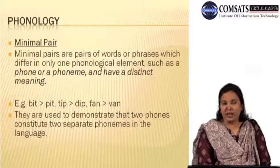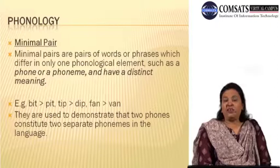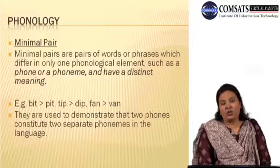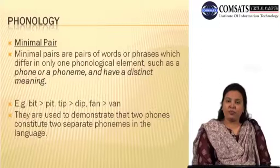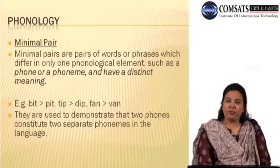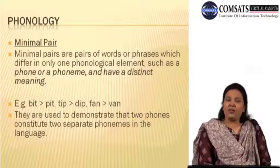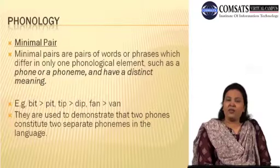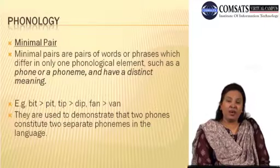Take another example: 'tip' and 'dip.' Again, the last two sounds are same but only changing the first phonological element — 'ta' into 'da' — changes everything. The meaning gets changed: 'tip' changes into 'dip.' Take another example: 'fan' and 'ban.' One sound, 'fa' and 'ba,' is different, and once again the whole meaning gets changed. So the minimal pair is a pair of words in which they only differ with respect to one phonological element — that can be a phoneme or a phone.